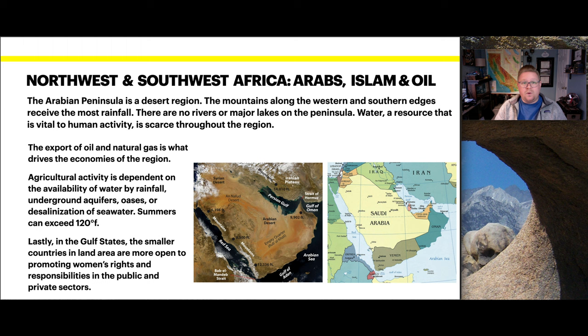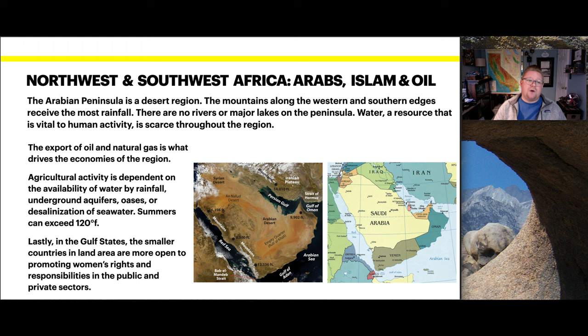Moving forward — the Arabian Peninsula is a desert region. The mountains along the western and southern edges receive most of their rainfall, although there are no rivers or major lakes on the peninsula. Water and resources vital to human activity are incredibly scarce. The export of oil and natural gas drives the economies, and agriculture is dependent on the availability of water by rainfall, underground aquifers, oases, and desalination of seawater. Most summer days can exceed 120 degrees Fahrenheit. In the Gulf states, the smaller countries are more open to promoting women's rights and responsibilities in the public and private sector.